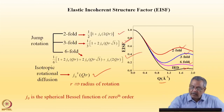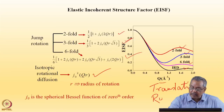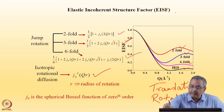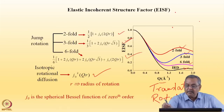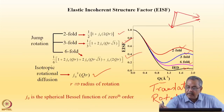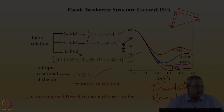We are not only talking about translational diffusion but also rotational diffusion. For an organic molecule undergoing rotational diffusion, with three sites — just like translational diffusion — the particle can jump from here to there or here to here, undergoing jump diffusion between these sites.